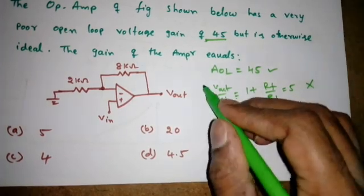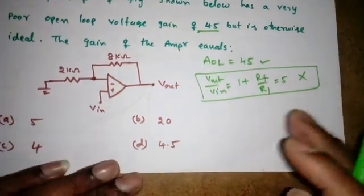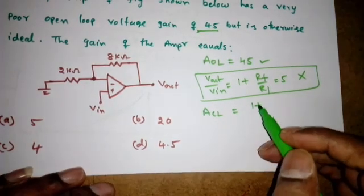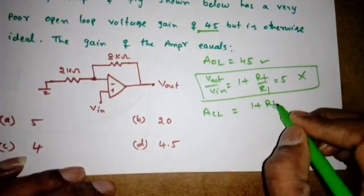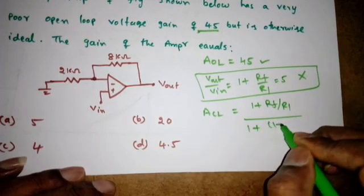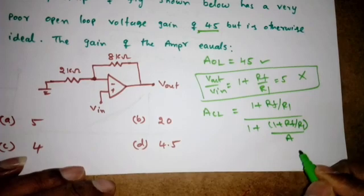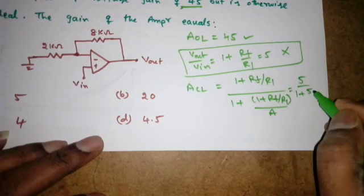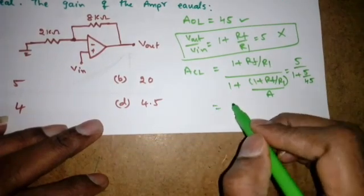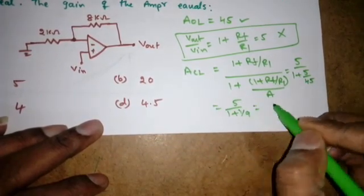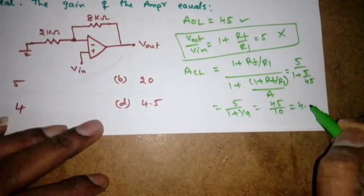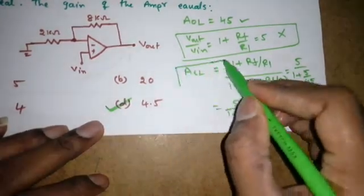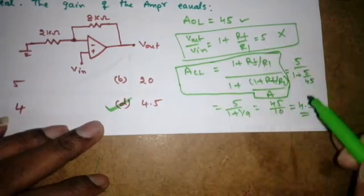But this is wrong, because an open-loop gain is given, which means we have to find the closed-loop gain. The closed-loop gain formula is: (1 + RF/R1) divided by (1 + (1 + RF/R1)/A). So (1 + RF/R1) is 5, and 5 divided by A (which is 45) gives 5 by (1 + 5/45) = 5 by (1 + 1/9) = 5 by (10/9), which gives 4.5. So option D is correct. This is the formula we need to remember for closed-loop gain in non-inverting configuration.